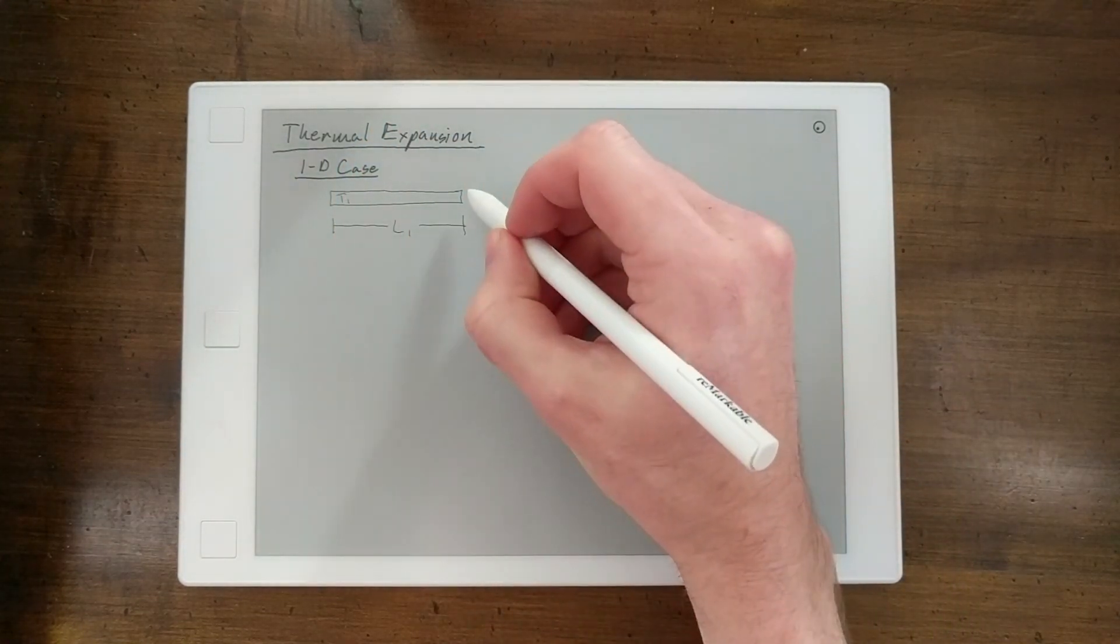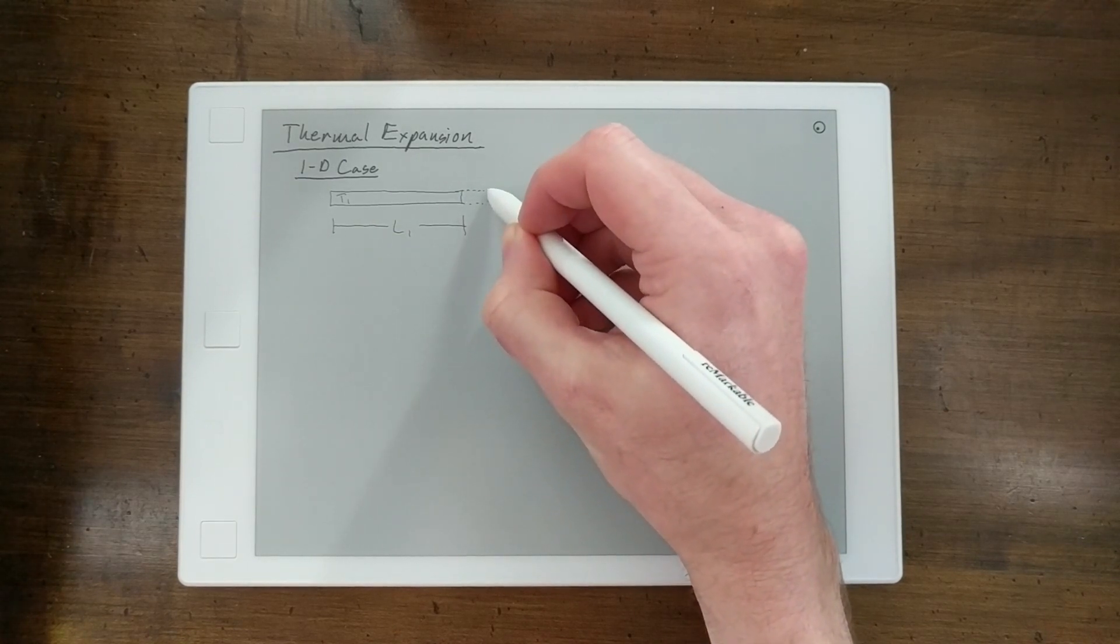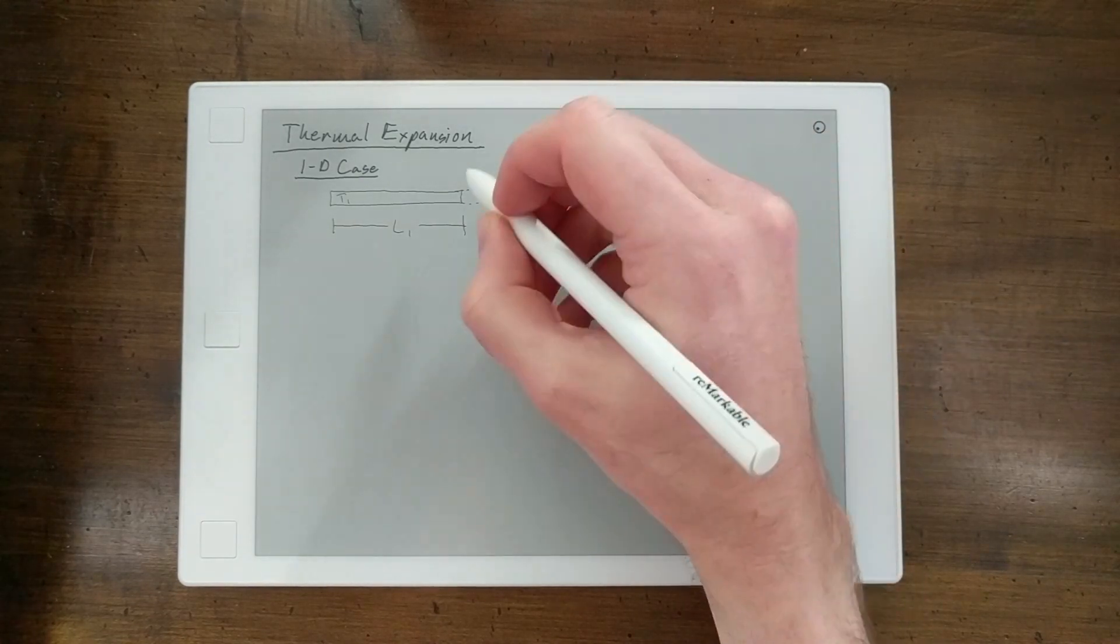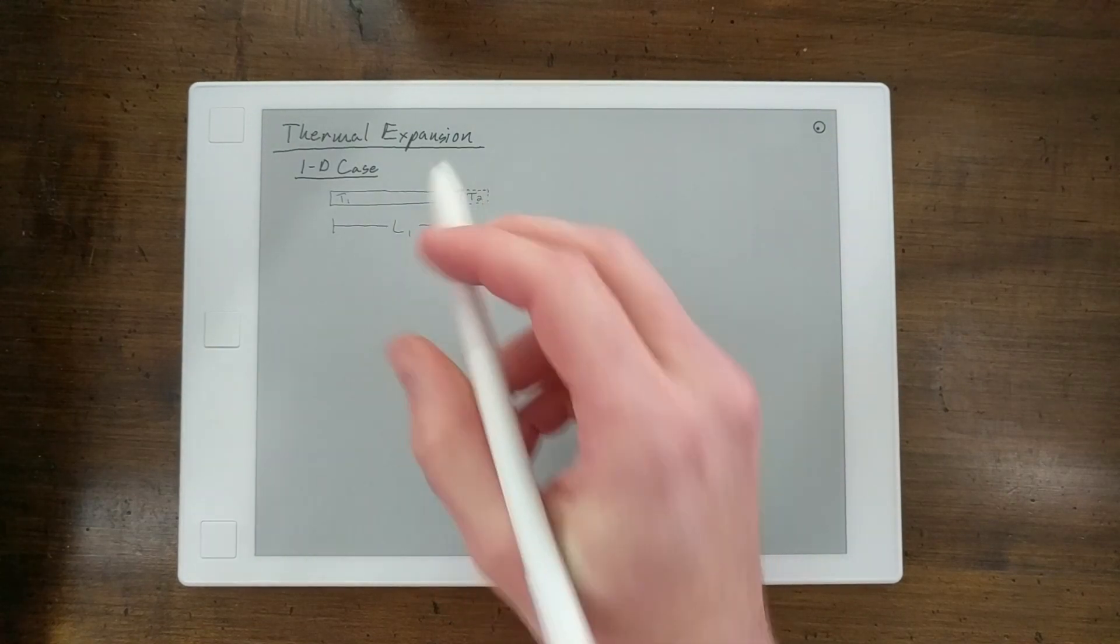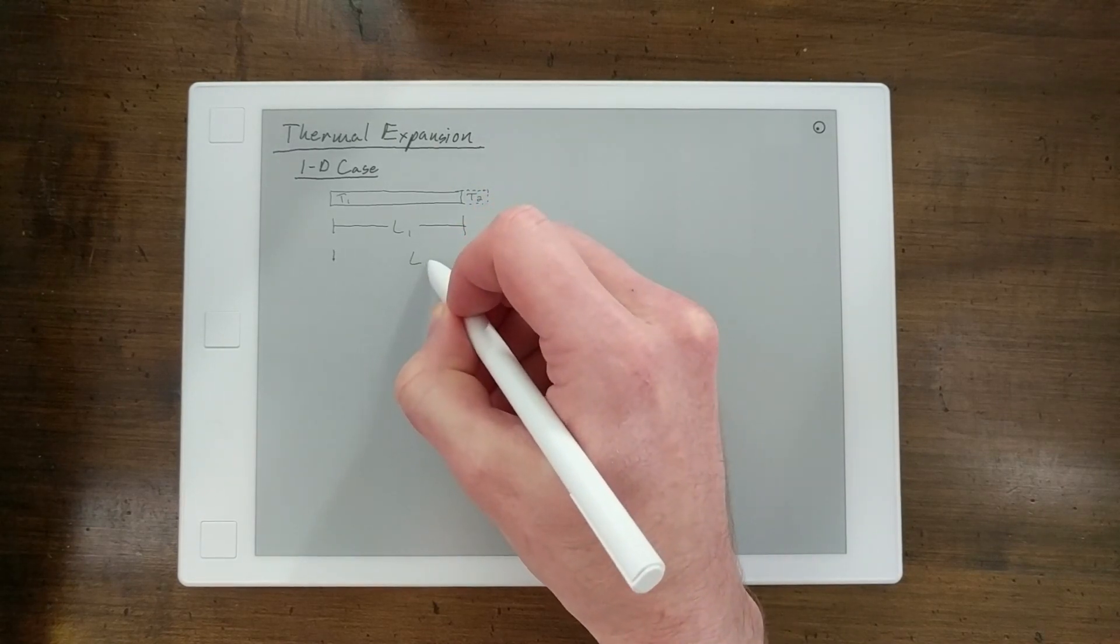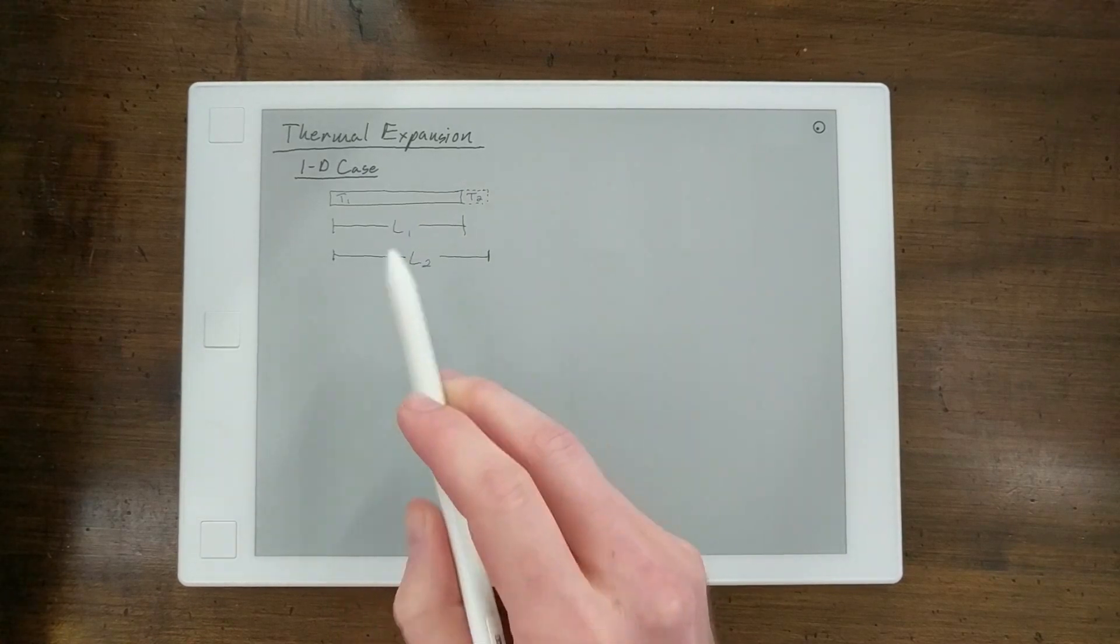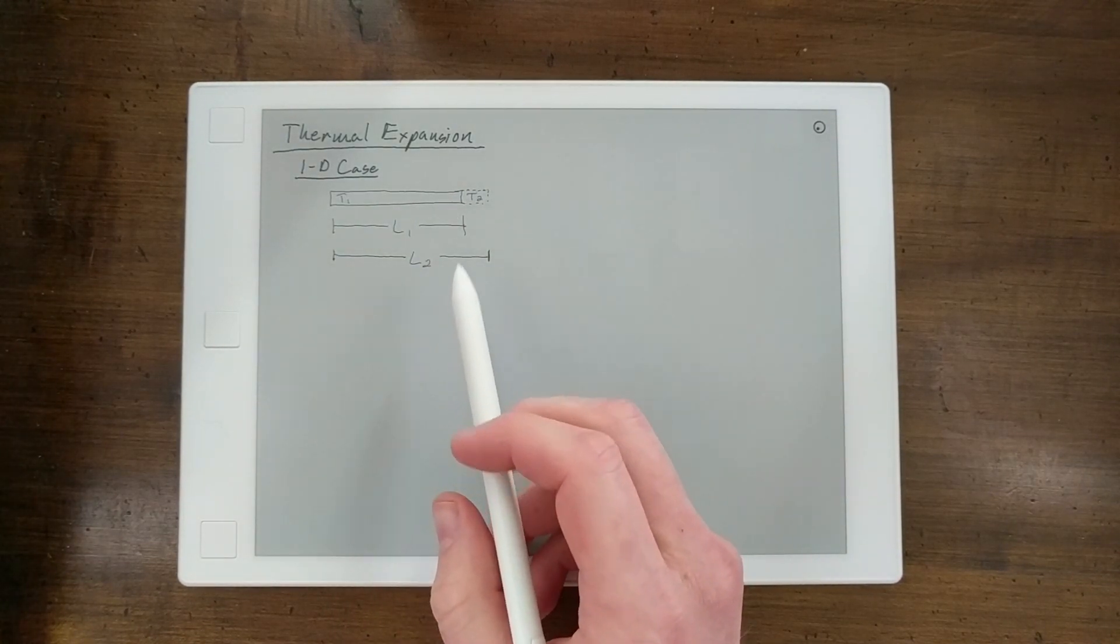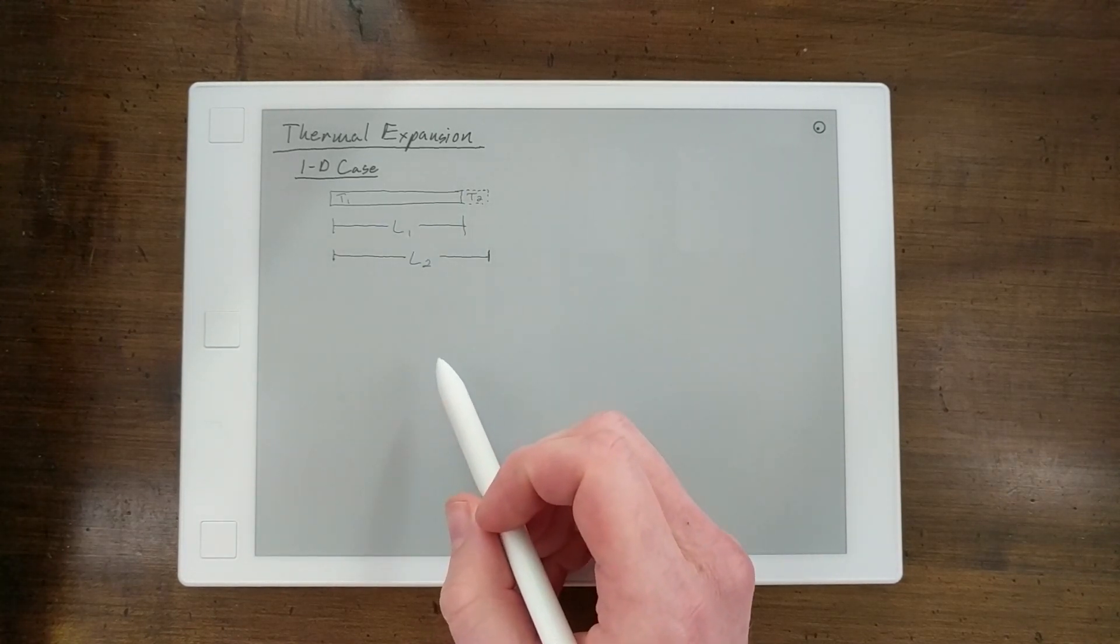And then when the part changes temperature it can expand. Now the thickness will expand as well but we're only interested in this length. And it'll expand to a certain amount at temperature 2, and that length would be L2. And that's really what we're trying to capture and measure and calculate when we're trying to figure out what's going to happen when the temperature changes.